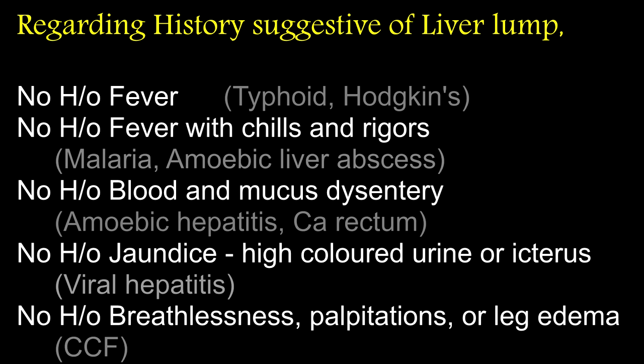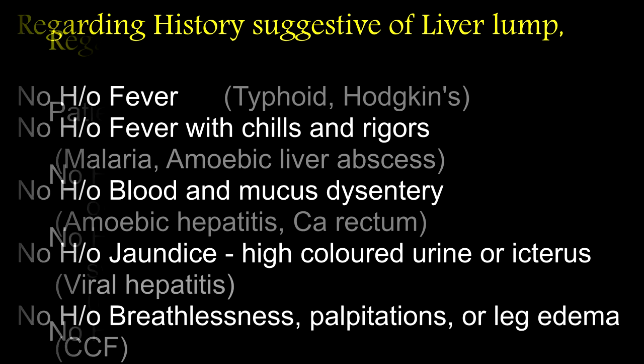Regarding history suggesting liver lumps: there is no history of fever, chills and rigors. No history of blood and mucus dysentery. No history of jaundice, that is high-colored urine or icterus. No history of breathlessness, palpitations or leg edema.